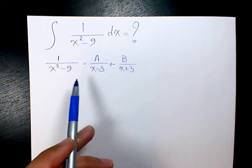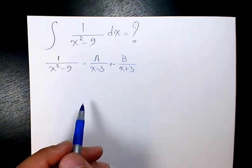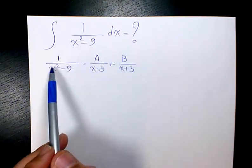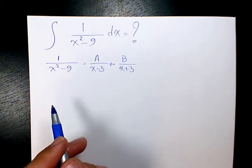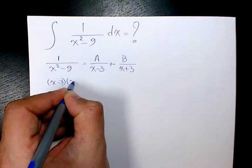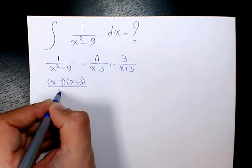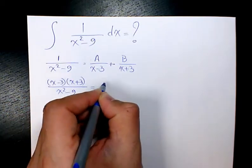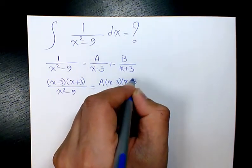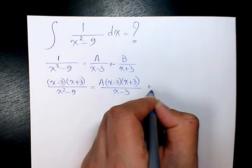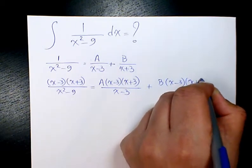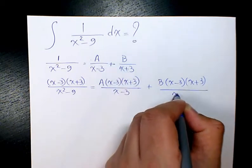We need to find out the values of A and B. How do we find out? We need to multiply each side by x minus 3 times x plus 3. So it will be x minus 3 times x plus 3 divided by x squared minus 9 equals to A times x minus 3 times x plus 3 divided by x minus 3 plus B times x minus 3 times x plus 3 divided by x plus 3.